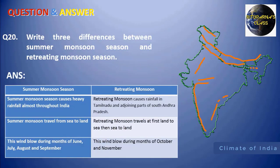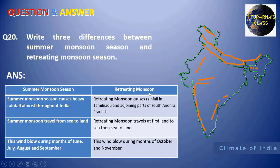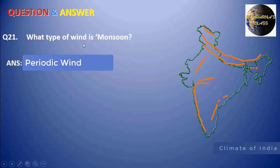Next: three differences between the summer monsoon season and the retreating monsoon season. The summer monsoon causes heavy rainfall almost throughout India, while during retreating monsoon only Tamil Nadu and adjoining parts of Andhra Pradesh receive rainfall. Summer monsoon travels from sea to land, but retreating monsoon first travels from land to sea and then sea to land. Summer monsoon blows during June, July, August, and September, while retreating monsoon blows during October and November.